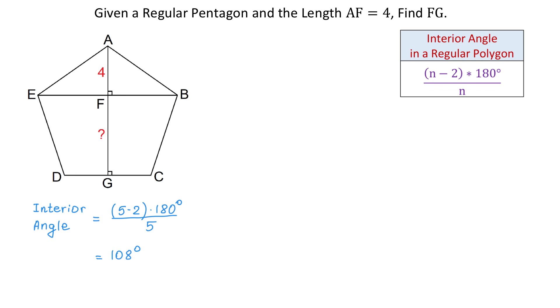The line segment AG bisects this angle of 108 degrees and now we can say that each of these angles measures 54 degrees. Now, in the right triangle AFB, we can use the angle of 54 degrees and the side that has 4 units to find the hypotenuse, which is also the side of the pentagon.